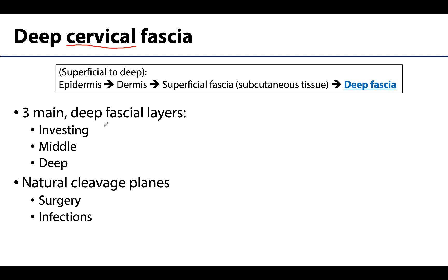Potential spaces between these layers create what we refer to as natural cleavage planes, through which tissues may be separated during surgery without injuring other structures, or on the bad side, can allow infection to travel within these spaces. Usually in a healthy individual, these tissues are closely adhered to one another or filled with relatively loose connective tissue. There are three main layers and we will discuss them from superficial to deep. Be aware that if you look at 10 different textbooks there will be 10 different descriptions, so we are going by the terminology in the most up-to-date version of Gray's Anatomy.